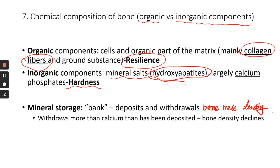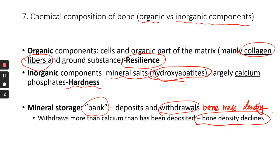The bones are really served as a bank for calcium — a storage site for calcium. Your body has other functions that require calcium, so your body may withdraw calcium from your bones to perform other functions, or deposit and store calcium in bones. If you withdraw more calcium than has been deposited, your bone density will decline. This definitely happens to people who have a deficiency in calcium or even vitamin D, because vitamin D promotes the absorption of calcium — people with those deficiencies will suffer a loss of bone density.